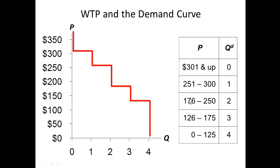If the price goes up to $176 to $250, then there are only two individuals who are willing to pay, and that would be Flea and Anthony. Once we get to $251 to $300, then only one individual is willing to pay, and that is Flea. And if the price of an iPod goes above $300, then none of our buyers are willing to buy. When we take this table — remember from demand, price and quantity — and map it out on a demand diagram: